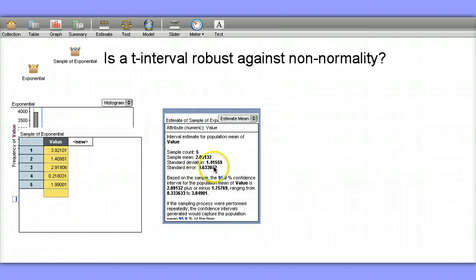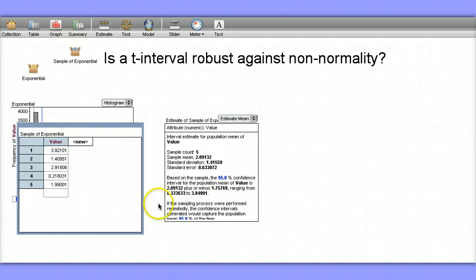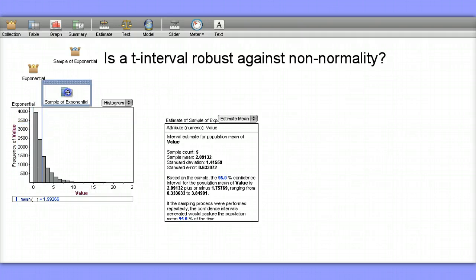Our standard error, which is the standard deviation divided by the square root of the sample size, is 0.63. And our interval is about 0.33 to 3.85.